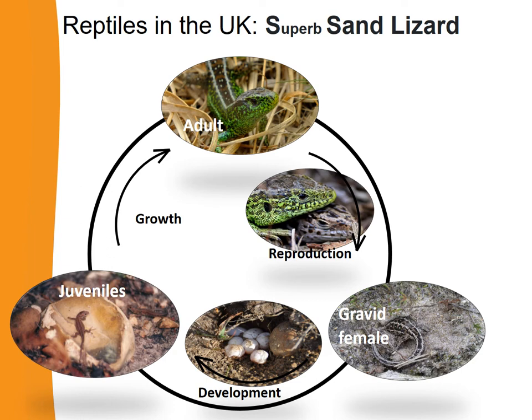Now let's look at the life cycle of the sand lizard. Starting with the adult, the adults reproduce, and like the grass snake this is an oviparous animal — one that lays eggs outside of its body. When the female has mated she will find the perfect tunnel. Sand lizards need sand to dig these tunnels to lay their eggs to reproduce. The gravid female makes this tunnel with the perfect conditions, then lays her eggs in it. Those eggs develop until they hatch into the juveniles, and the juveniles grow and develop into the adults.